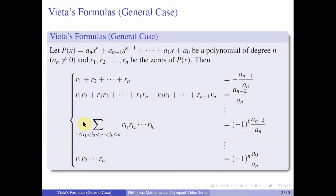Let P of X be equal to a sub n times x raised to n, plus a sub n minus 1 times x raised to n minus 1, plus so on and so forth, plus a sub 1 times x, plus a sub 0, be a polynomial of degree n. So that means that a sub n is not equal to 0. And let r sub 1, r sub 2, dot dot dot, r sub n be the zeros of P of X.